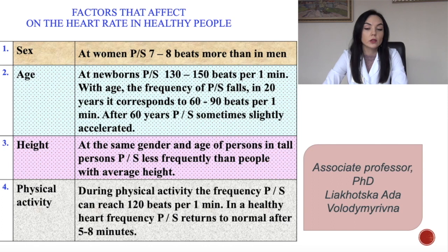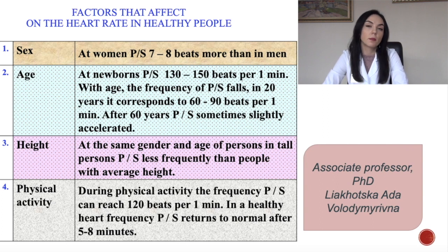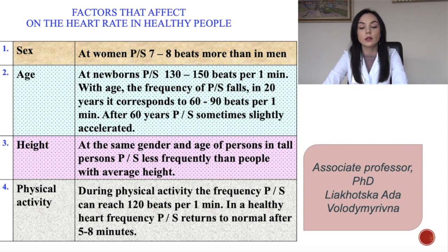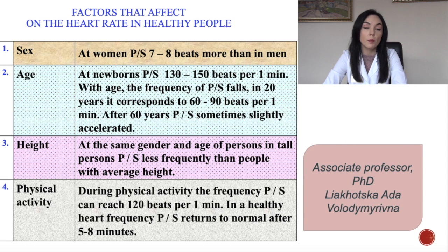What are the factors affecting heart rate in healthy people? In women, the pulse is more than 7-8 beats higher than in men. Regarding age: a newborn's pulse is 130-150 beats per minute — normal. With age, the frequency falls. In adults at 20 years it is 60-90 beats per minute, and after 60 it sometimes slightly accelerates. In tall persons of the same gender and age, pulse is less frequent than in people of average height.